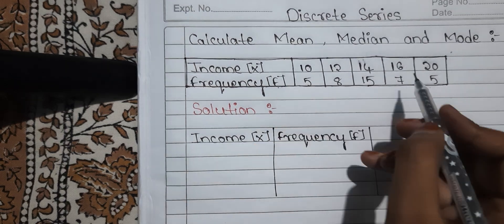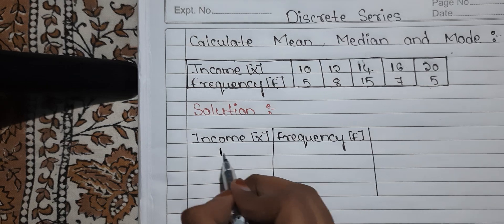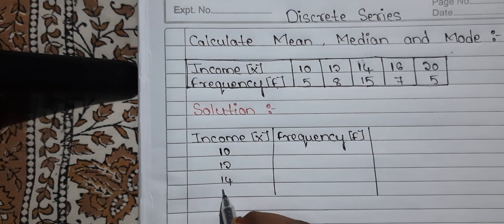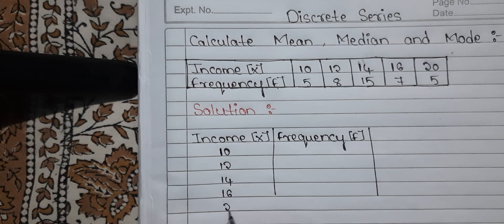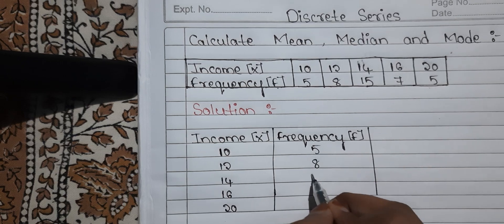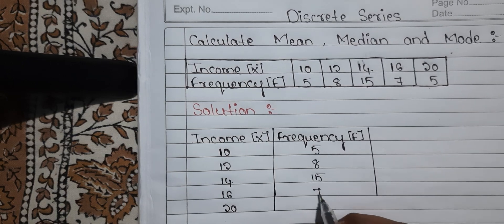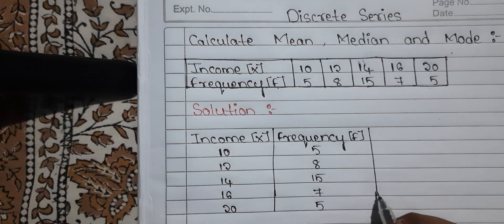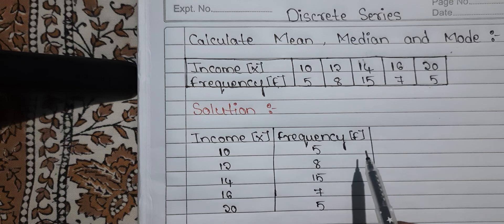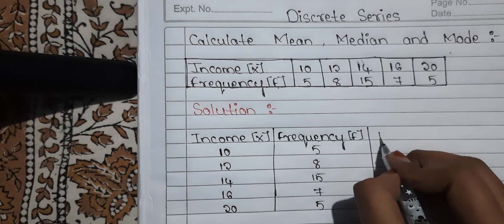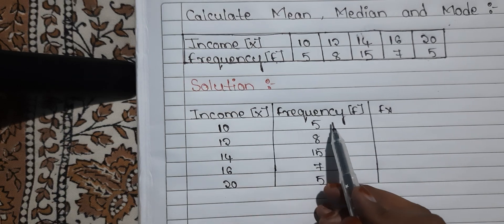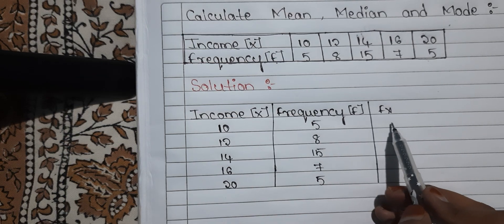Whatever they have given in the question, copy it. The X values are: 10, 12, 14, 16, 20. The frequency values are: 5, 8, 15, 7, 5. This is what they have given in the question. After taking X and F, next we find FX. FX is nothing but when you multiply X value with F value, you will be getting FX.